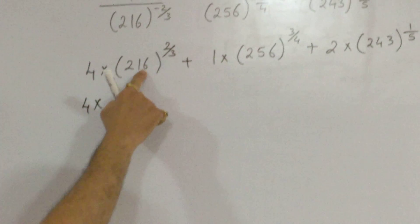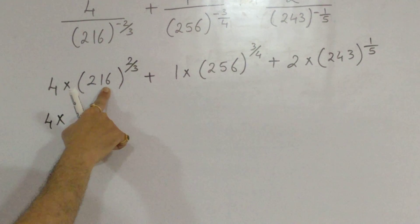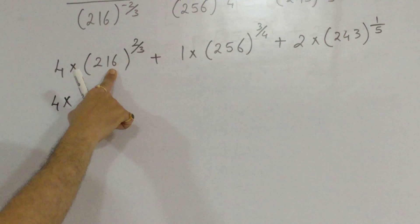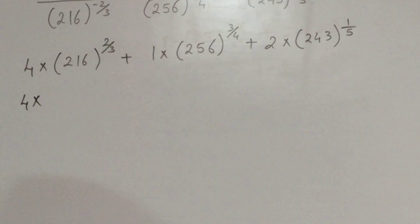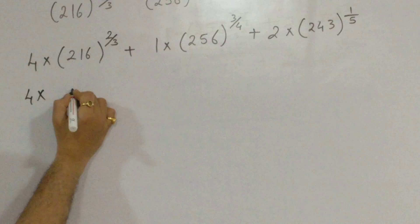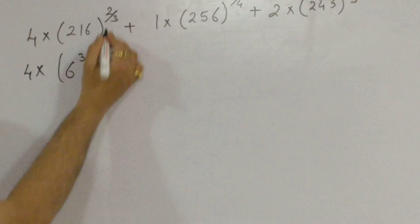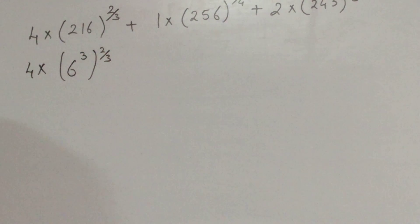4 into 216. 216. Which number will have power equal to 3? Yes, any guesses? Yes, yes, it is 6 raised to 3. 216 can be written as 6 raised to 3, the whole 2 by 3.